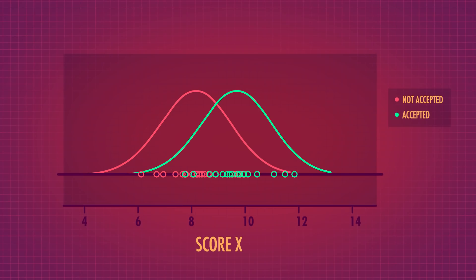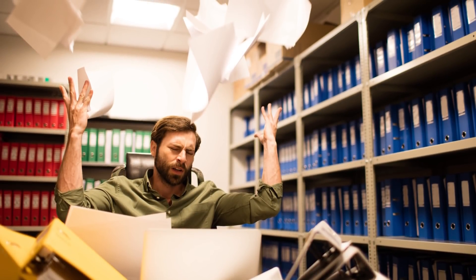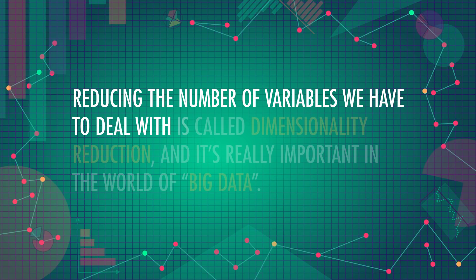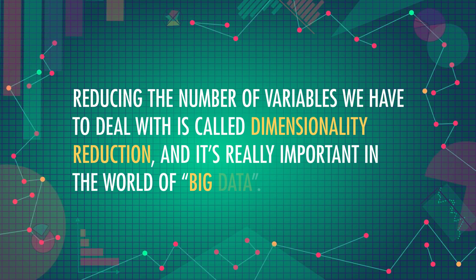Then we can plot the distribution and use Bayes' rule to predict whether a new student, Brad, is going to get into the school. Brad's Score X is 8, so we predict he won't get in, since it's more likely under the did-not-get-in distribution. Creating a Score X can simplify things a lot. Here we looked at two variables, but that's not the case if we have a hundred variables for each student. Using fewer numbers also means the computer can do faster calculations. Reducing the number of variables we have to deal with is called dimensionality reduction — it's really important in the world of big data, making it possible to work with millions of data points each with thousands of variables.